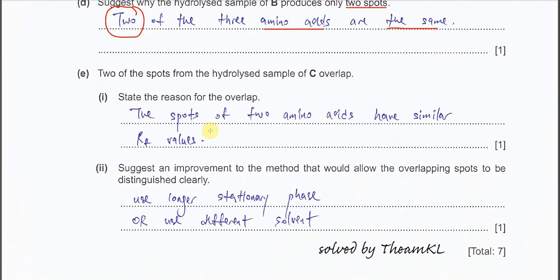Okay, part E. Two of the spots from the hydrolyzed sample C overlaps. Okay, state the reason for the overlap. Okay, because the spot of two amino acids have the similar RF value.